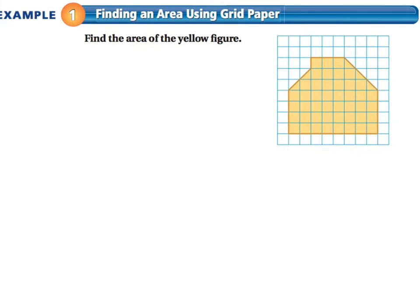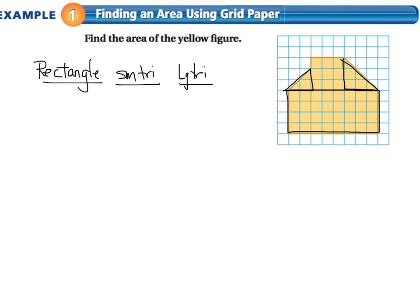So find the area of the yellow figure. You can cut it up, and you could say, okay, well, Mr. Humphreys, I see that I have a rectangle here. So I'm going to find the area of a rectangle. And by the way, when you do this, I would stay organized and write down each piece you're finding the area of. Then I see I have a small triangle, and then I could say I have a large triangle. And then I have a square.